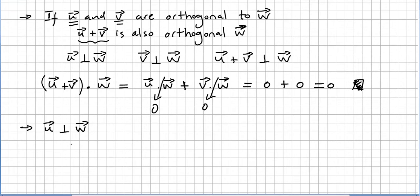Another example is this one. If u is orthogonal to w, then any scalar multiple k times u, where k is the scalar, is also orthogonal to w. And this is really easy to prove too.